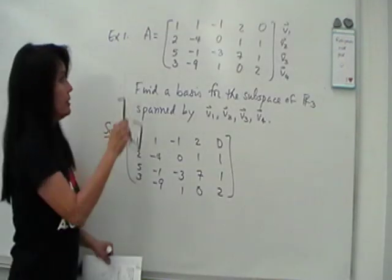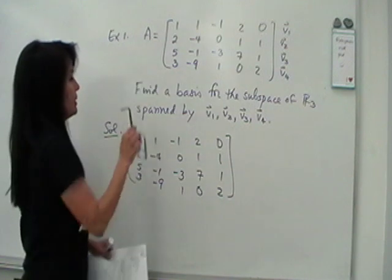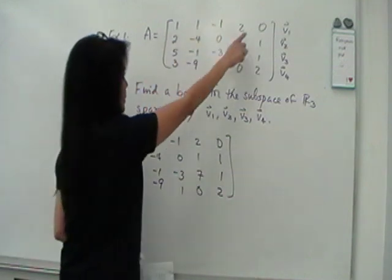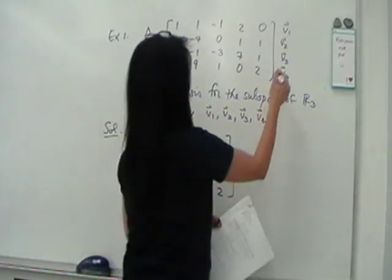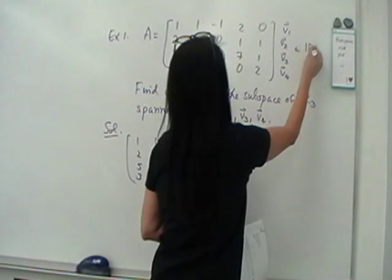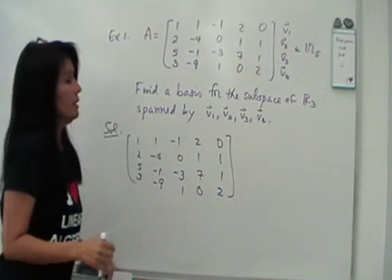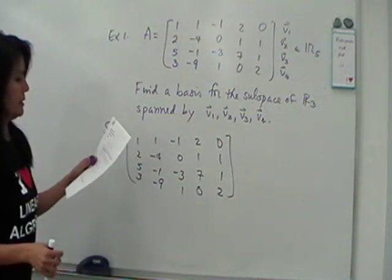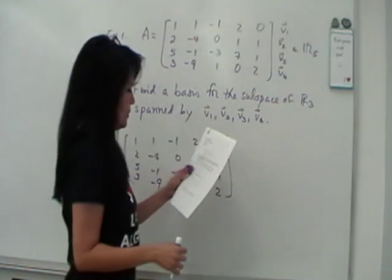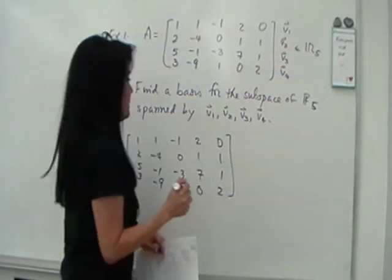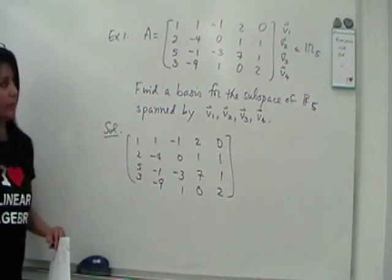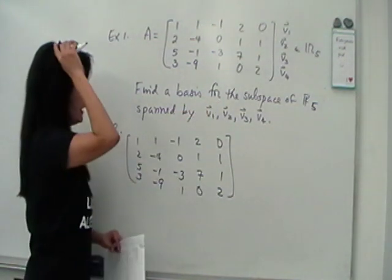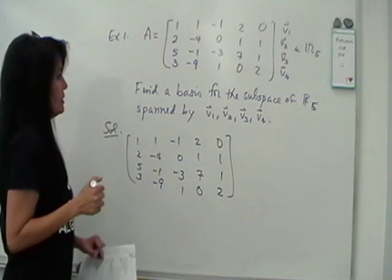Let's see how the theorem applies to this example. I have this matrix A, which is 4 by 5. And let's look at the rows as vectors in, these are vectors in R sub 5. 1, 2, 3, 4, 5. So we want to find a basis for the subspace of, I think I copied this wrong, R5, spanned by V1, V2, V3, V4. So let's find a basis, not for the entire R5, but just for the subspace of R5.